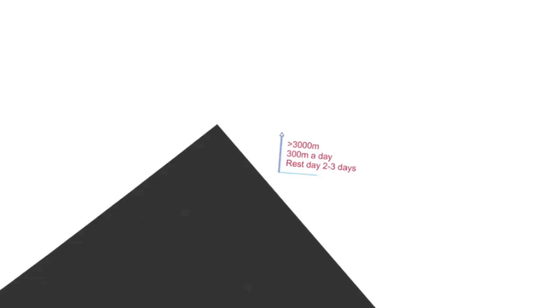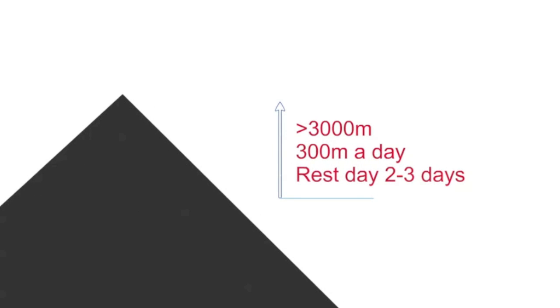To facilitate adequate acclimatisation, the recommended rate of ascent at an altitude greater than 3000 metres is no more than 300 metres a day. This should be accompanied by a rest day after every 2-3 days of climbing. It is also recommended, as an aid to acclimatisation, that people climb to a higher altitude on their day of rest, but return to sleep at the same altitude.